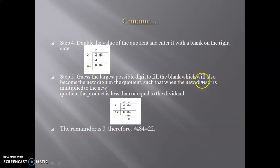Such that when the new divisor is multiplied to the new quotient, the product is less than or equal to the dividend. The remainder is 0. Therefore, the root of 484 is 22.